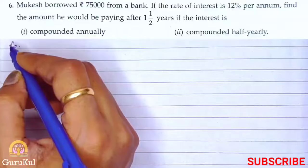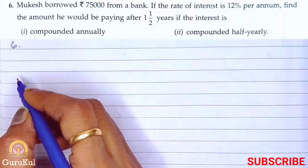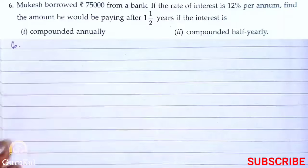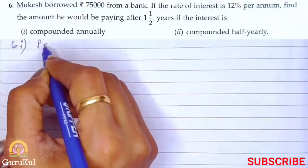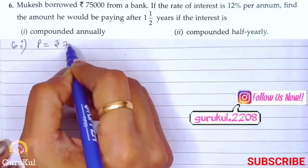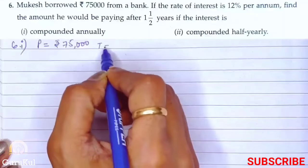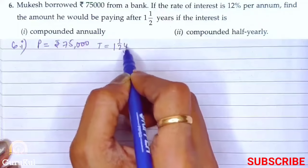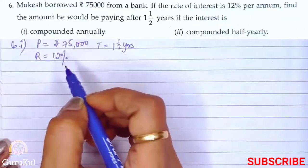Question number 6: Mukesh borrowed Rs. 75,000 from a bank. If the rate of interest is 12% per annum, find the amount he would have to pay after one and a half years — first if the interest is compounded annually, and second if the interest is compounded half yearly. The principal is Rs. 75,000, time is one and a half years, and rate is 12% per annum.